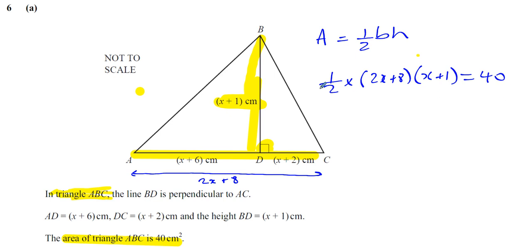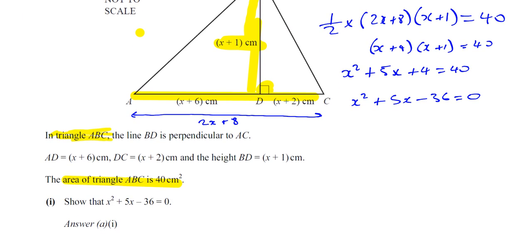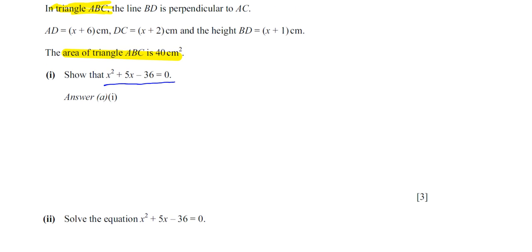We know that equals 40 square centimeters. Now I can multiply this whole bracket by a half, leaving with x plus 4. So I'll have x plus 4 times x plus 1 equals 40. If I expand this bracket, I'll have x squared plus x plus 4x, which gives plus 5x, plus 4, equals 40. Now I can subtract 40 from both sides. I'll be left with x squared plus 5x minus 36 equals 0, which is exactly what we have to prove.